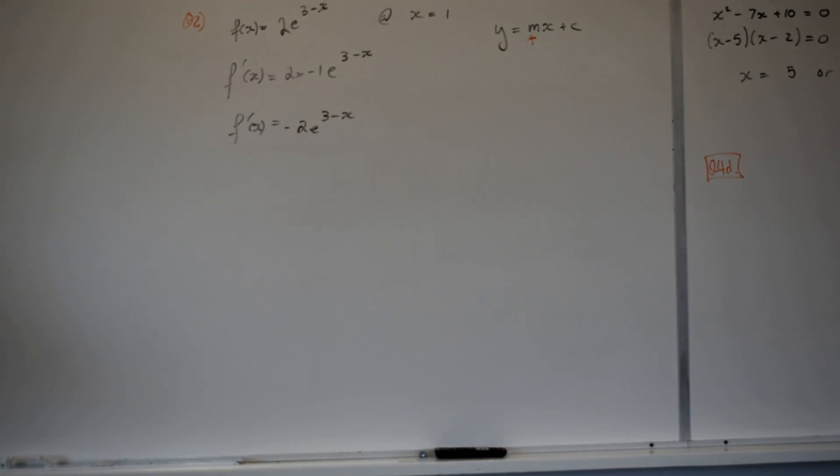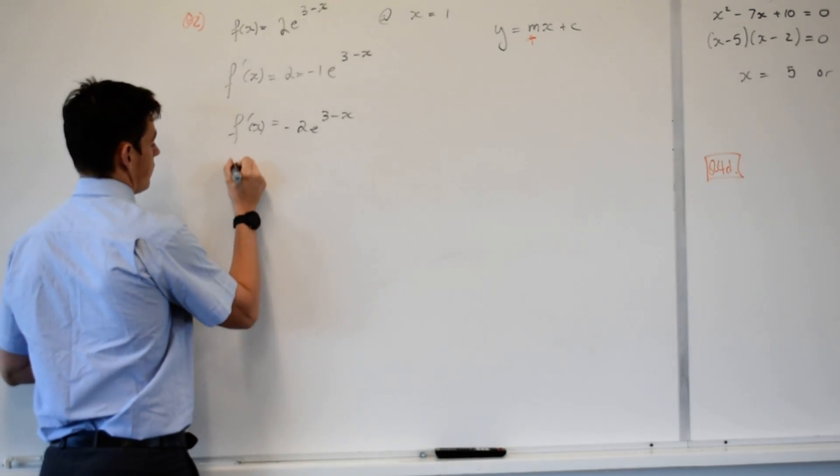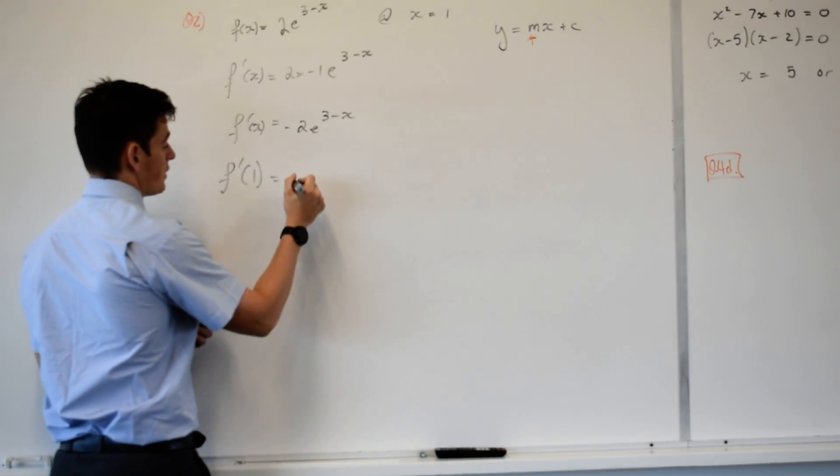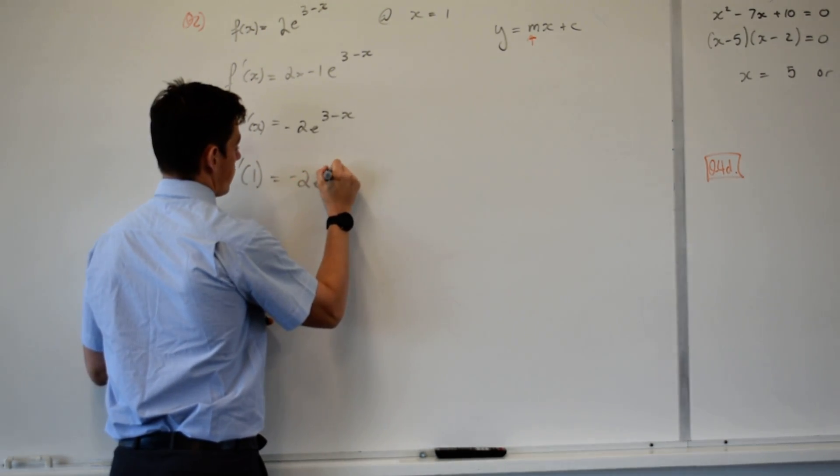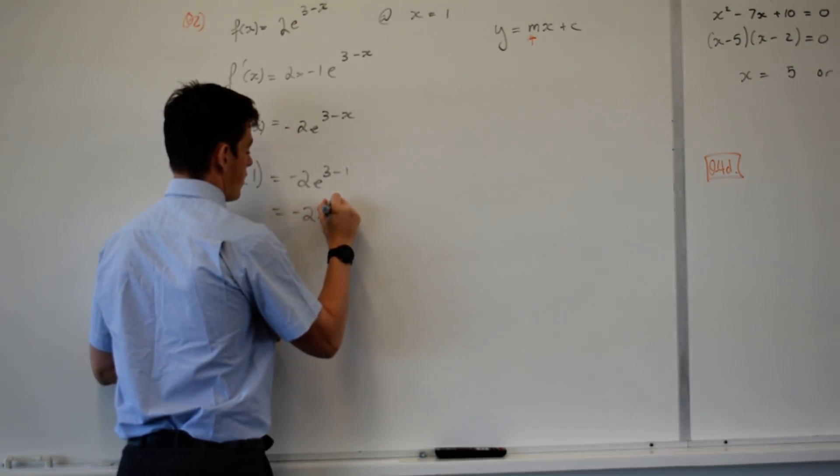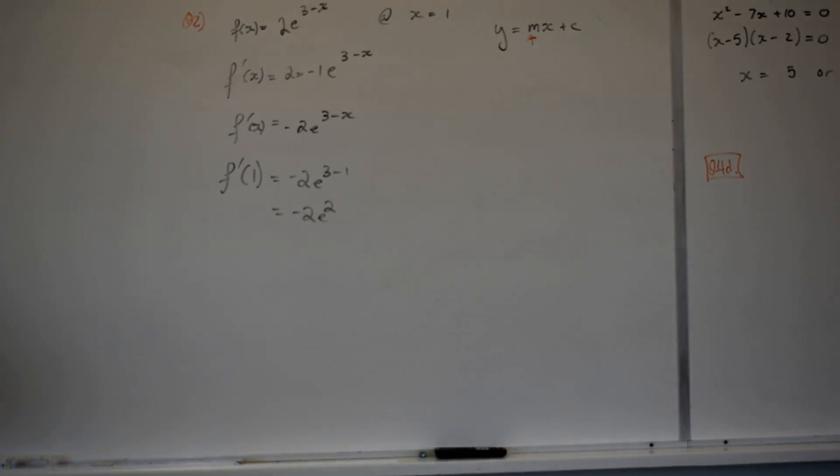To find my gradient, I let x equal 1 and simply sub it into my equation. So I should get negative 2e to the power of 2. So that's my gradient.